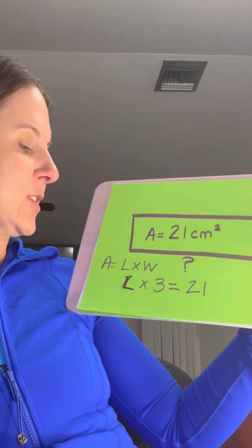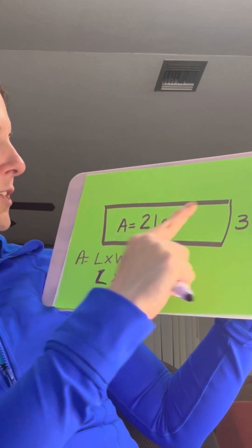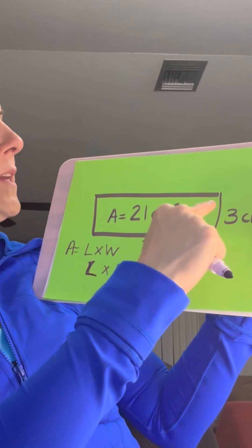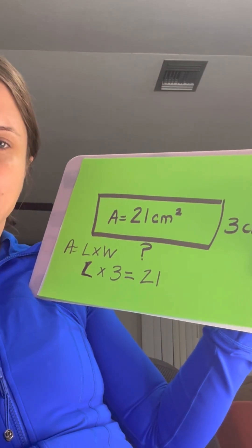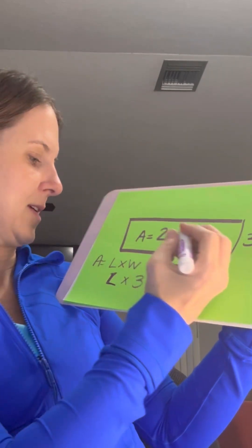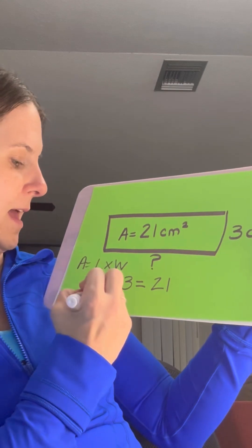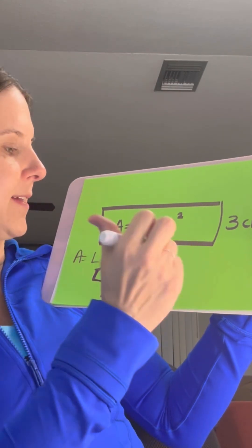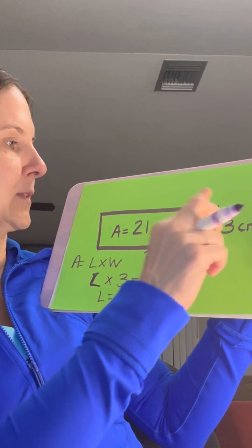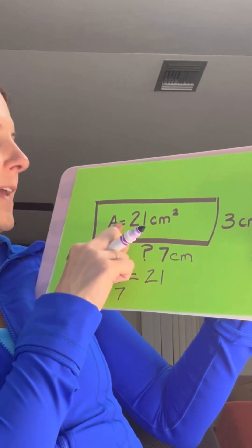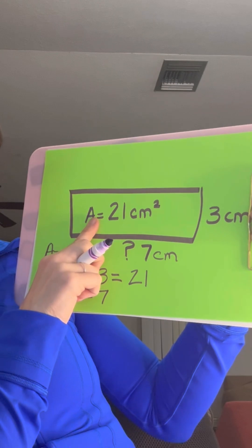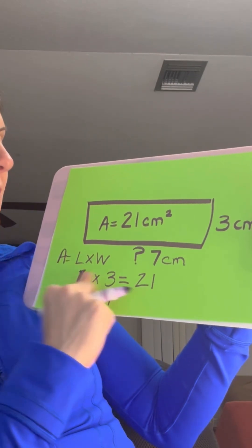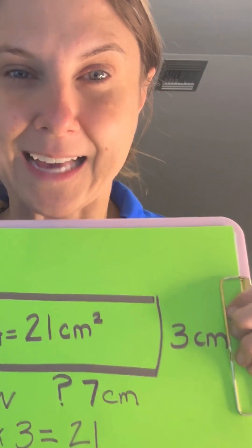Or, I taught my students you just do the opposite. What's the opposite of multiplication? Division. So 21 divided by three is what? Seven. So L would equal seven, and that makes sense, right? Seven centimeters times three centimeters equals 21. So the area is 21 square centimeters. That's what you have to do when you have a missing side.